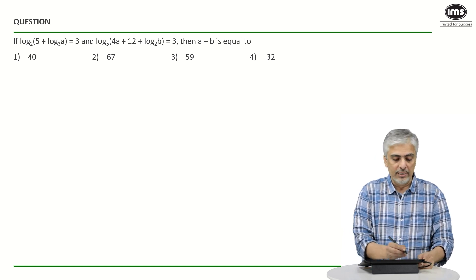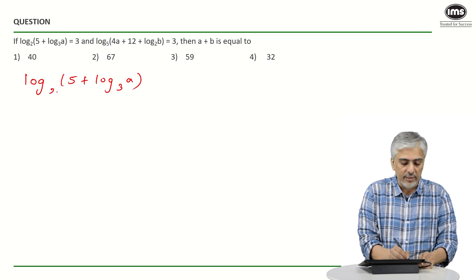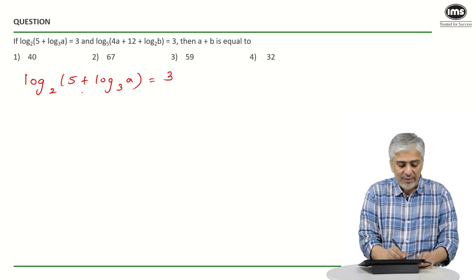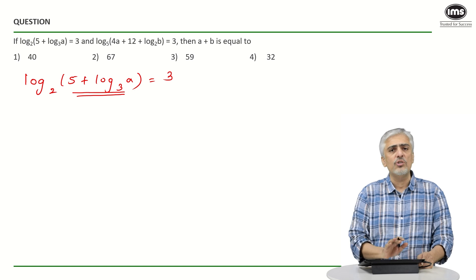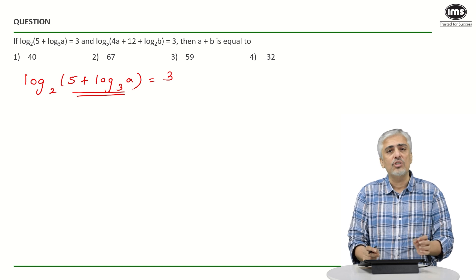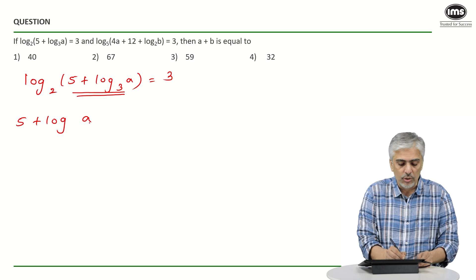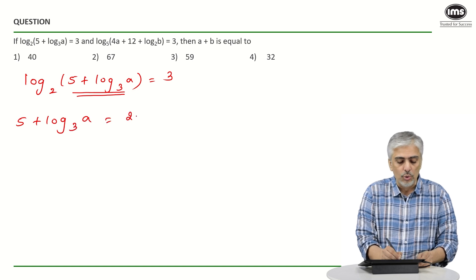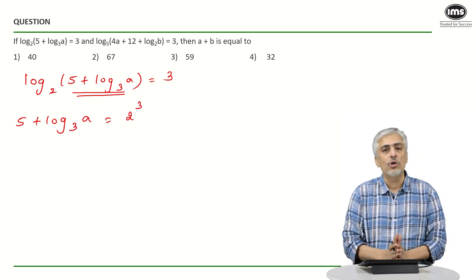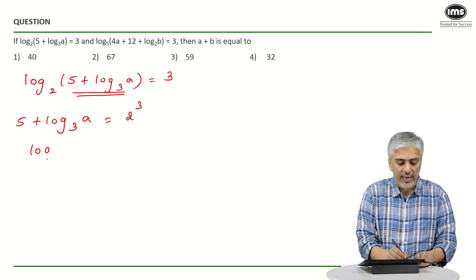They have asked us for a+b. So my first equation is: log base 2 of (5 + log base 3 of a) = 3. Don't get confused by the nested log — just think of that whole inner part as x. So log base 2 of x = 3, which means x = 2³ = 8. So 5 + log base 3 of a = 8, which gives log base 3 of a = 3.